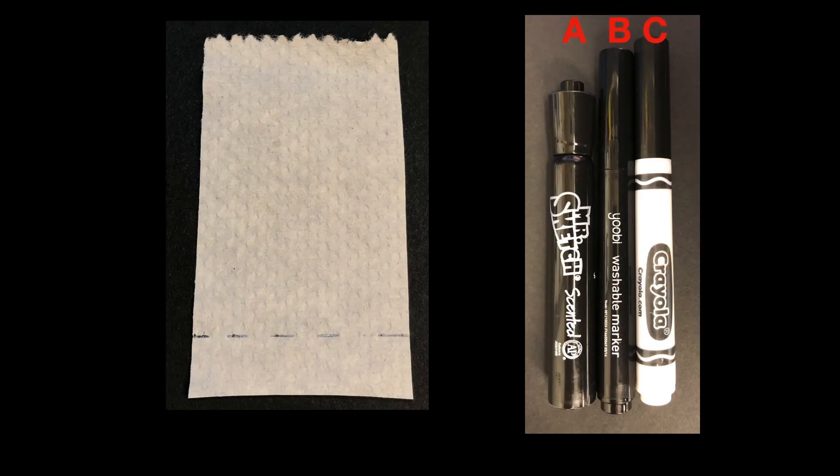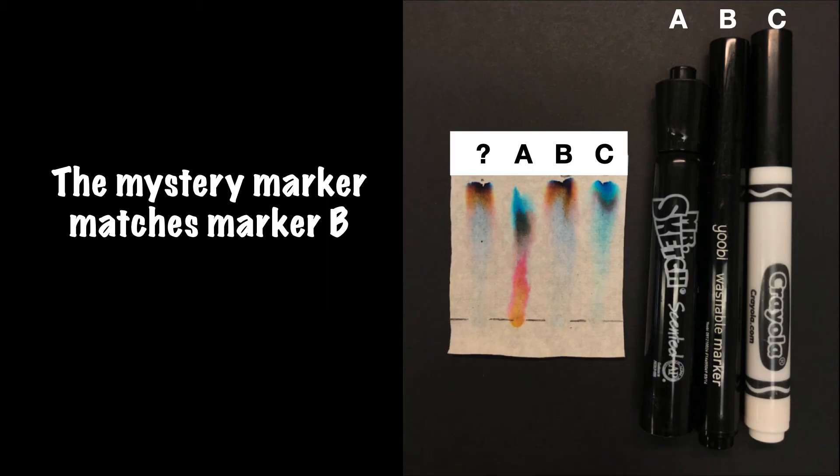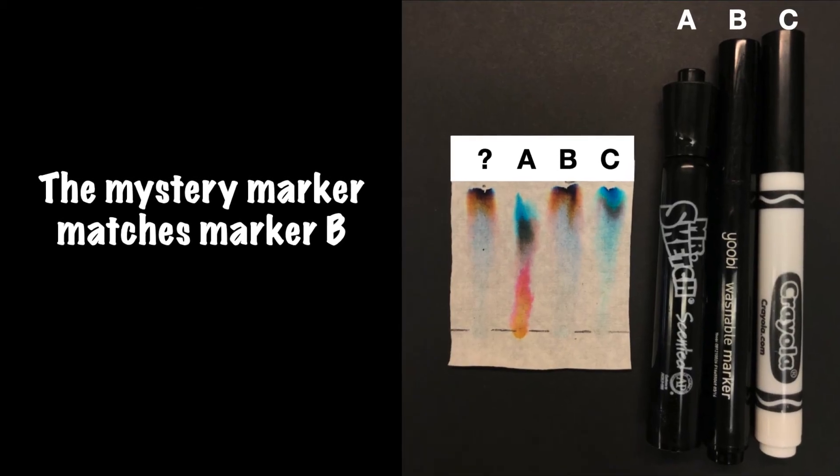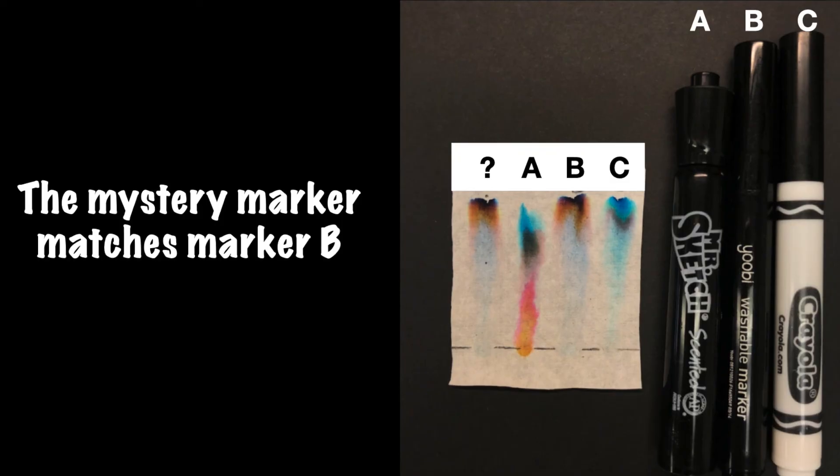If you want to use what you've learned to solve an actual mystery, you can come up with a scenario with your friends or family members at home. Have one person choose a marker that nobody else knows the identity of and have them write a spot on your paper towel. Then take all three of the markers and write them alongside that unknown mystery spot. You should be able to match the mystery ink after you run the chromatography to a known correct pen.